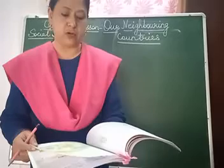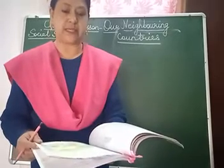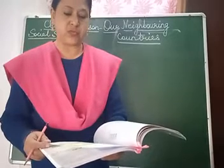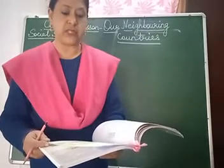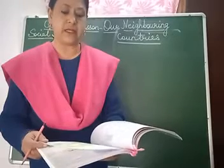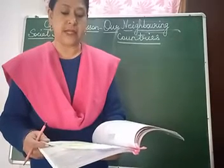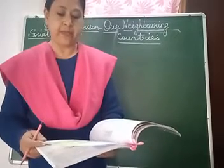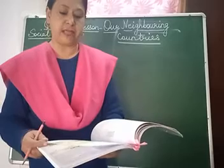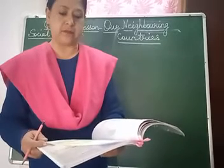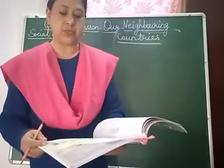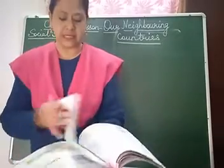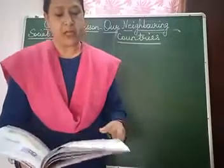Pakistan — Islamic Republic of Pakistan. Location: it is located in southwest Asia. It has a coastline on the Arabian Sea to the south. Iran is located to its west, Afghanistan to its northwest, China to the northeast, and India to the east.